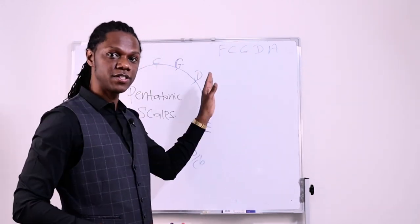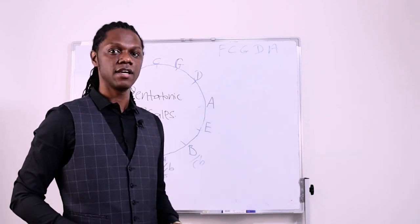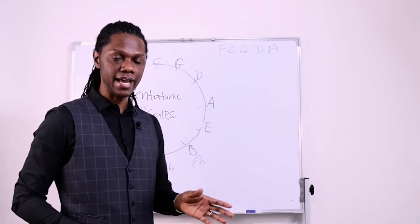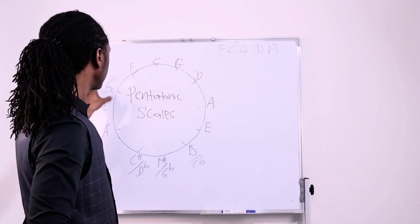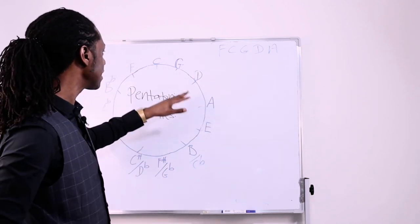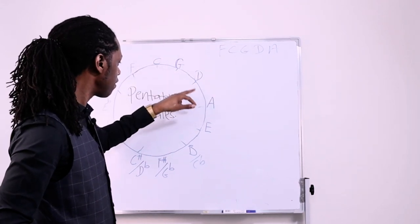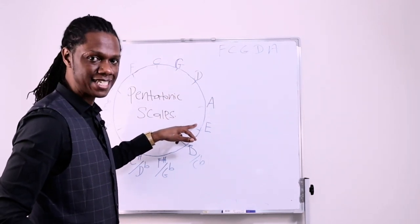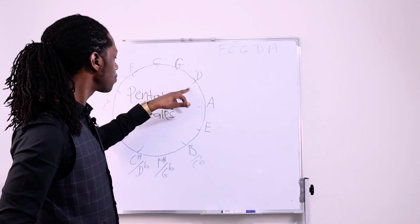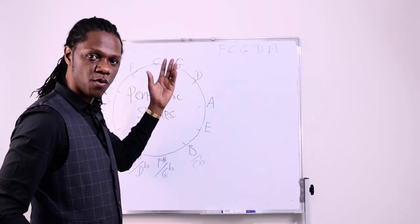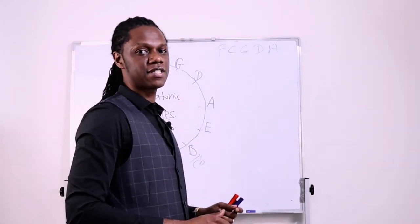So, remember, you can write out each scale and you strike out interval four or the fourth degree and the seventh degree of the scale. Or you can just look at your circle of fifths going around clockwise and you just take the five notes from wherever. So, C, one, two, three, four, five. And you reorganize them. Then you go to G, one, two, three, four, five. And you keep going around with the circle of fourths and fifths.